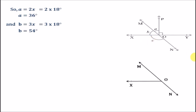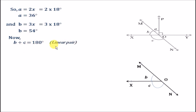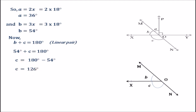We actually need to find the value of c. To do so, we shift our focus to straight line MN. On straight line MN, angles b and c form a linear pair, as their addition gives us the straight angle MON. So b plus c equals 180 degrees. The value of b is 54 degrees, so 54 degrees plus c equals 180 degrees. Taking 54 to the right, c equals 180 minus 54, which gives us 126 degrees. Hence, the value of c is 126 degrees.